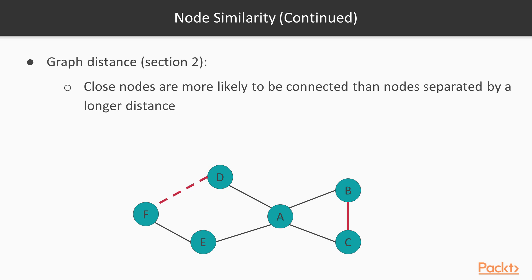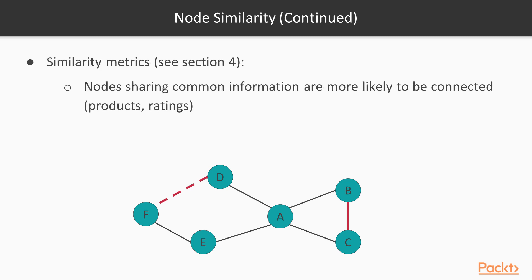On this simple graph here, the link between B and C is more probable, since the unweighted shortest distance between them is only two hops, while the shortest distance between D and F is three hops, so they are less likely to be connected.